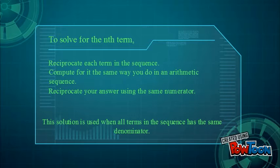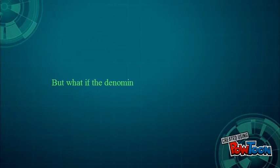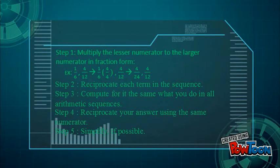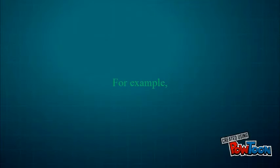Reciprocate your answer using the same numerator and simplify if possible. But what if the denominators are different? Multiply the lesser numerator to the larger numerator in fraction form. Reciprocate each term in the sequence, compute the same way you do in arithmetic sequences, then reciprocate your answer using the same numerator and simplify if possible.